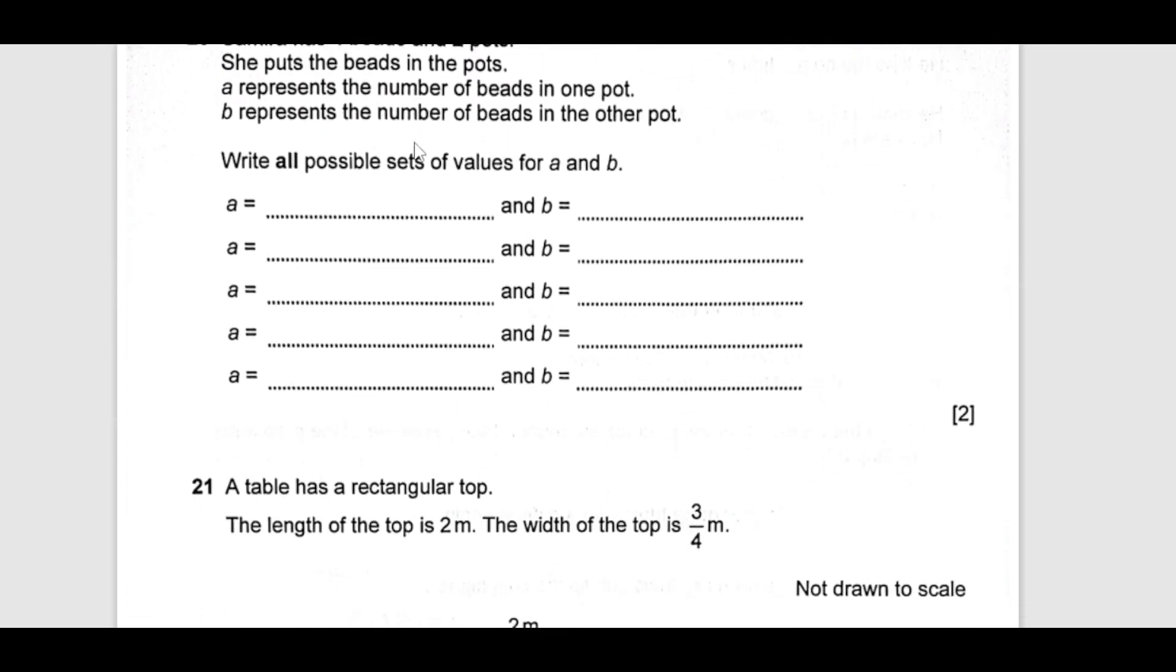Samira has four beads and two pots. She wants to put the beads in pots. A represents number of beads in one pot, B represents number of beads in another pot. Write down all possible values of A. She can put all the beads in B, then there will be nothing remaining. So that's one possibility: A is 0, B is 4. Then she can put one here, three here. Two and two, same in this. Then she can put three here and one here. Then she can put all four in A and nothing in B. So these are the possibilities.